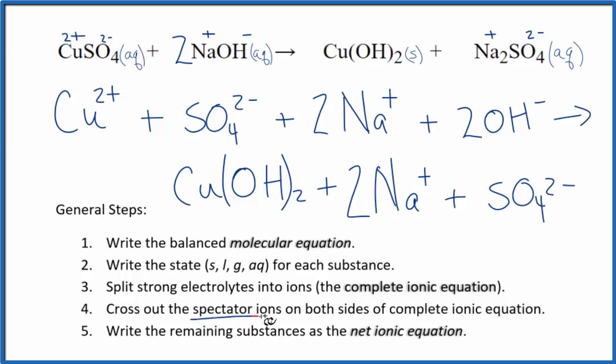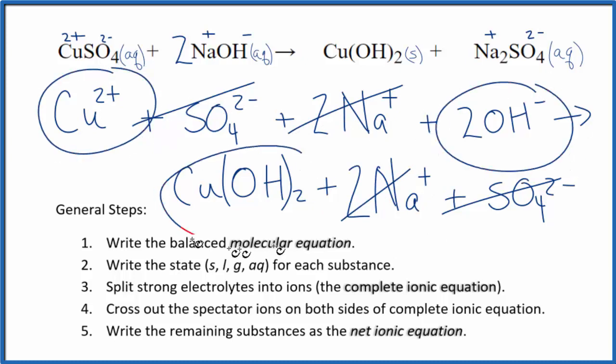Now what we can do is cross out spectator ions. They're on both sides of that complete ionic equation. In effect, they don't change in the chemical reaction. They're the same at the beginning as they are at the end. So we're not interested in those. So I see a sulfate here in the reactant, sulfate in the products. I'm going to cross those out. I see 2 sodium ions in the reactants, 2 in the products. Cross them out. And what's left, that'll be the net ionic equation.